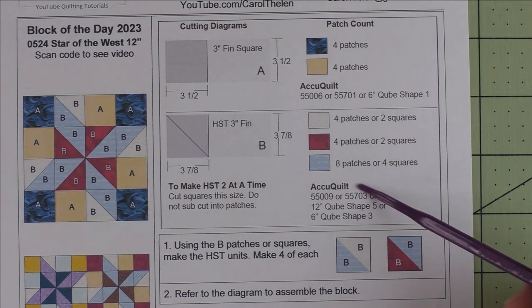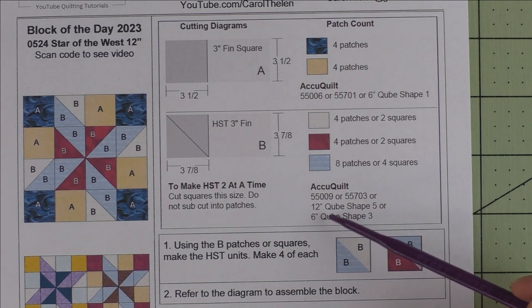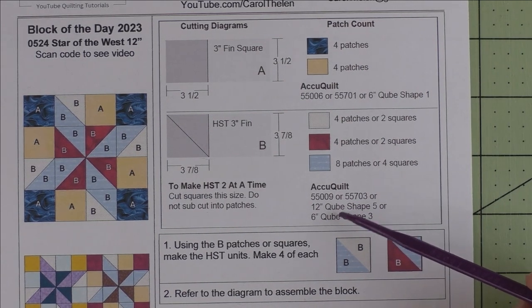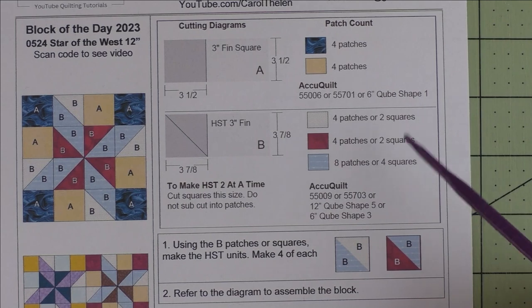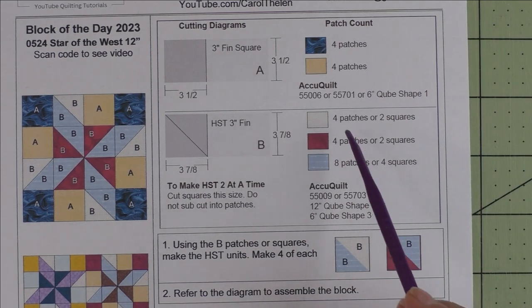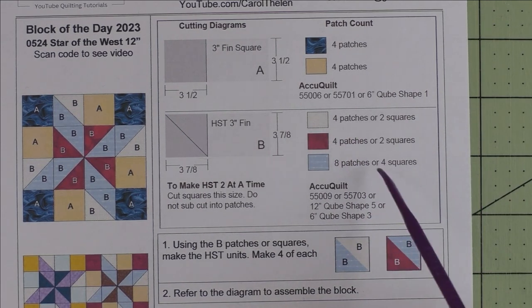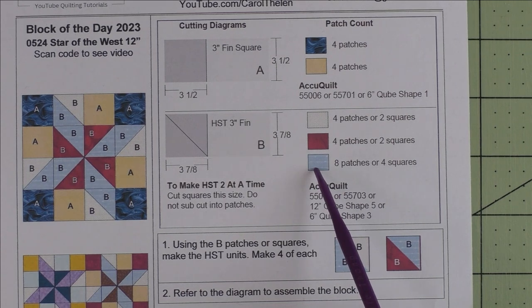If you want to use your AccuQuilt, here are the shapes. Here are the dies you can use to get these shapes. You need four patches of the red and the white each, and eight patches of the light blue.